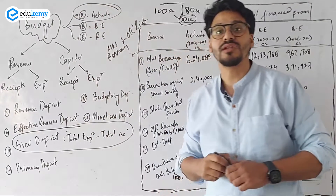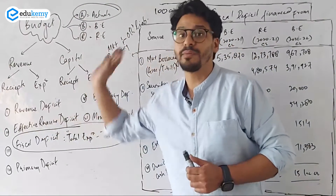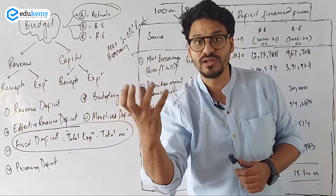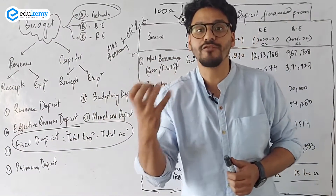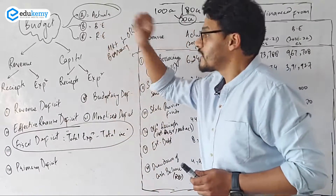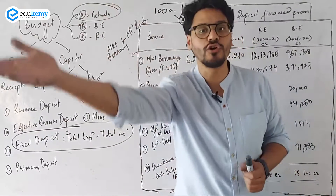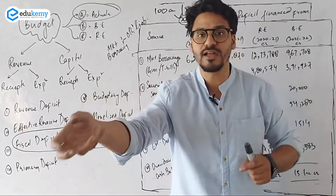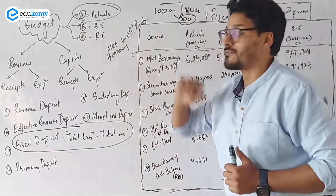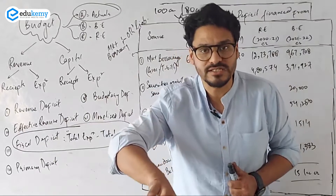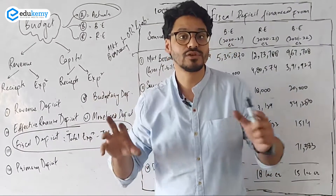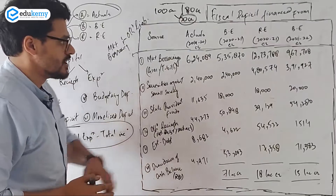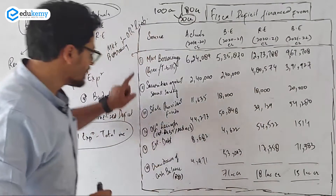These are the three important data points: actual data is of the preceding year — the year that has ended — showing how much money was borrowed from the market. Then budget estimate is for the following year — how much money you are going to take from the market. And then the revised estimate is when you revise the budget estimate.